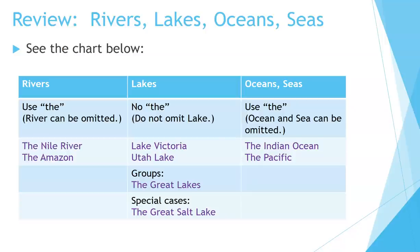Rivers: use THE. The word RIVER can be omitted. Examples: The Nile River, The Amazon. Lakes: no THE, don't omit the word LAKE. Examples: Lake Victoria, Utah Lake. Groups: The Great Lakes. Special cases: The Great Salt Lake. Oceans and Seas: use THE. The words ocean and sea can be omitted. Examples: The Indian Ocean, The Pacific.